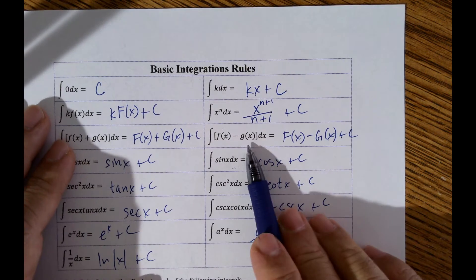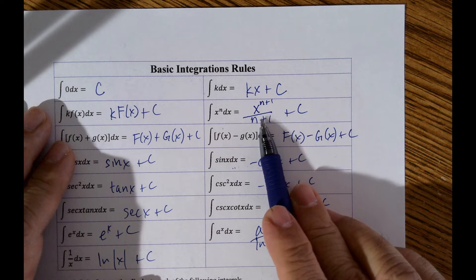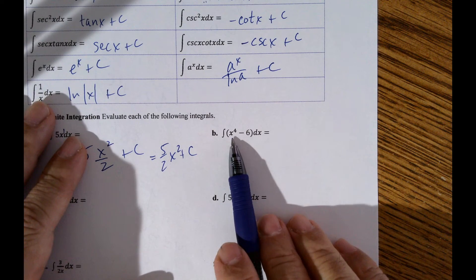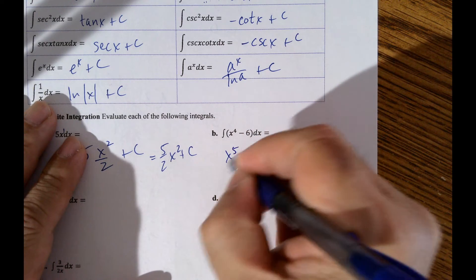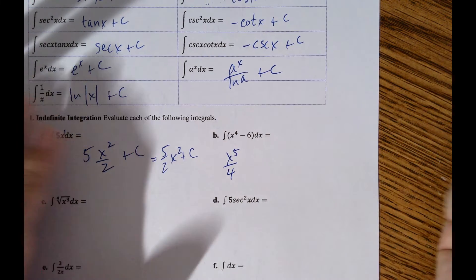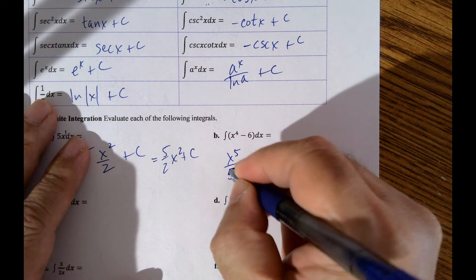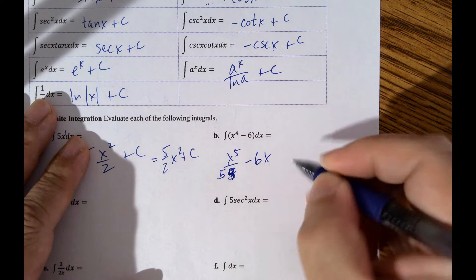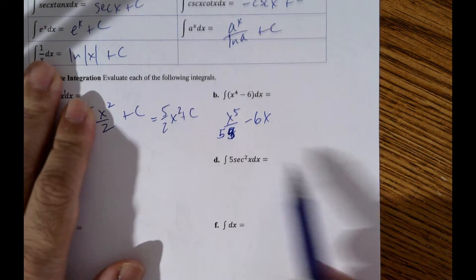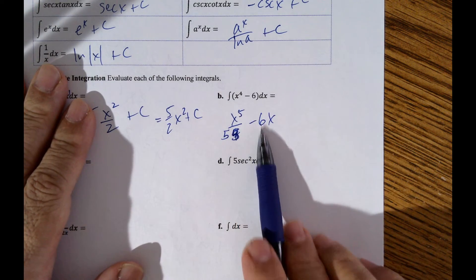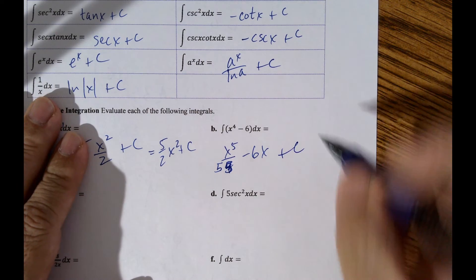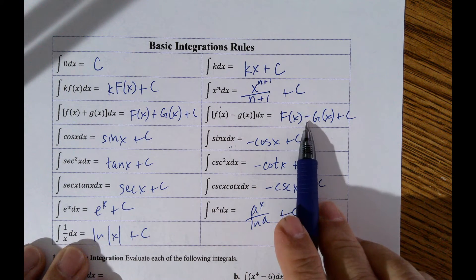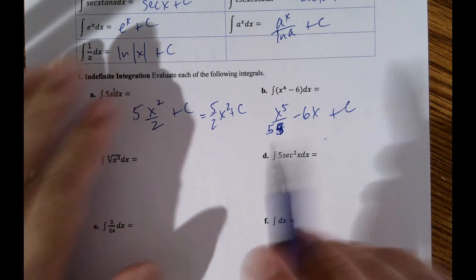This one uses the power rule and the constant rule. I add 1 to the exponent and divide by the new exponent: x to the 5th over 5. Minus 6x — remember, the integral of k is kx, so the integral of 6 is 6x. So the answer is x to the 5th over 5 minus 6x plus C. I'm subtracting two functions, so when I integrate them I still have that subtraction.